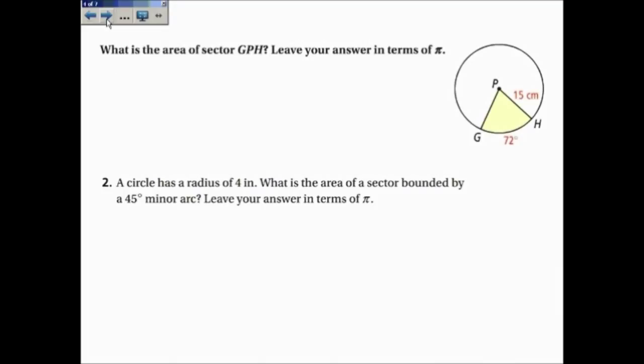Two examples. This sector has an angle of 72 degrees. So 72 out of 360 is the fraction of the whole circle that my sector is. And I multiply that times the area of the circle, pi times the radius squared. Now to leave my answer in terms of pi, I will multiply everything but kind of leave out pi. So I'll take 72 divided by 360 times 15 squared, and I get 45, and so this is equal to 45 pi, and then don't forget the units, centimeters squared.